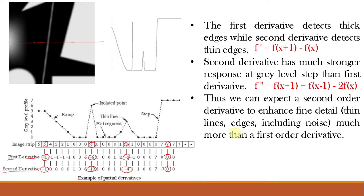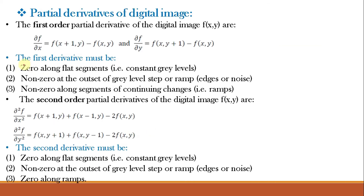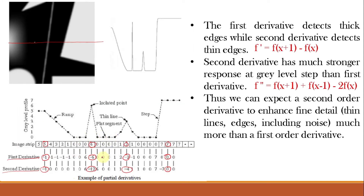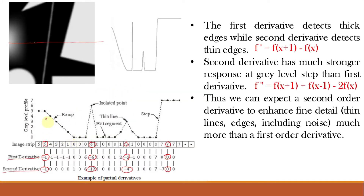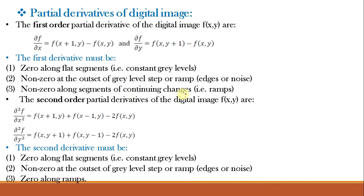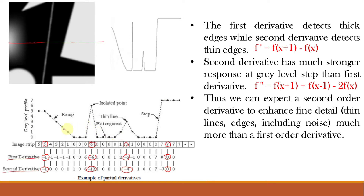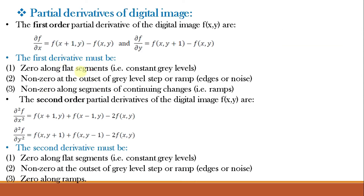Let us understand the properties we just saw. The first derivative must be 0 along flat segments, that is constant gray level. It is non-zero at the outset of a gray level step or ramp — edges or noise. It is also non-zero along segments of continuing changes, that is ramps. For example, along a ramp it gives values of −1, −1, −1.